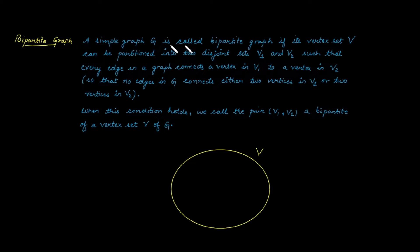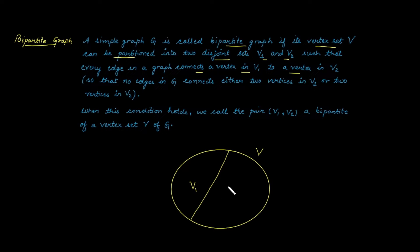A simple graph G is called a bipartite graph if its vertex set V can be partitioned into two disjoint sets V1 and V2 such that every edge in the graph connects a vertex in V1 to a vertex in V2. This means no two vertices are adjacent within V1, and no two vertices within V2 are adjacent. So if we can find such a partition of vertex set V, it is called a bipartite graph.